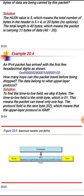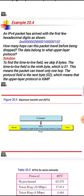Example 4: An IPv4 packet has arrived with the first few hexadecimal digits as shown. To find the TTL field, we skip the first 8 bytes — the TTL is the 9th byte, which is 0x01. This means the packet can travel only one hop. The protocol field (next byte) is 0x02, meaning the upper layer protocol is IGMP. (ICMP is 1, IGMP is 2.)